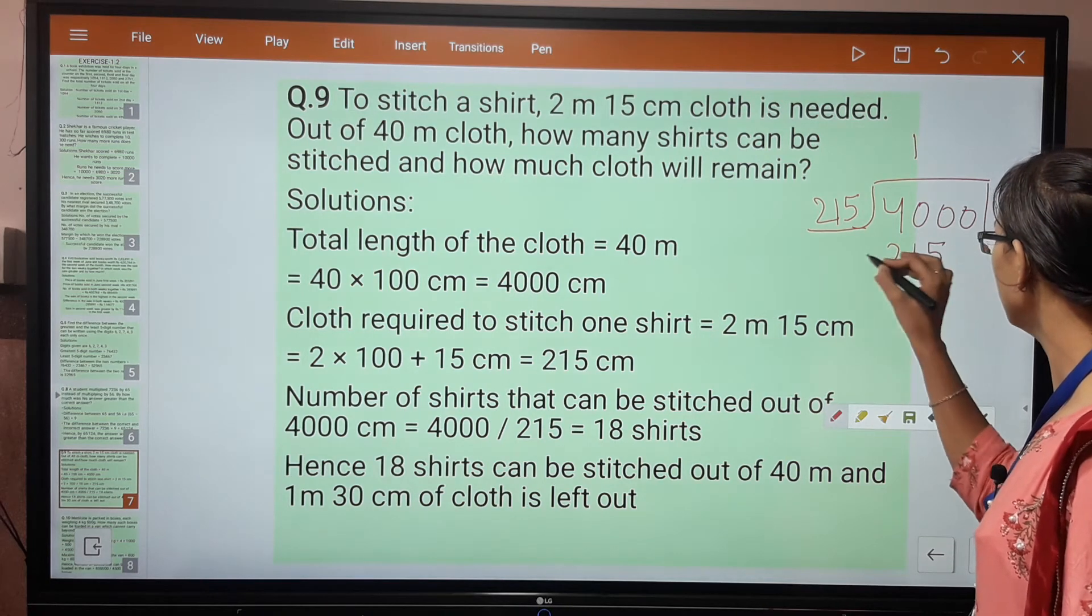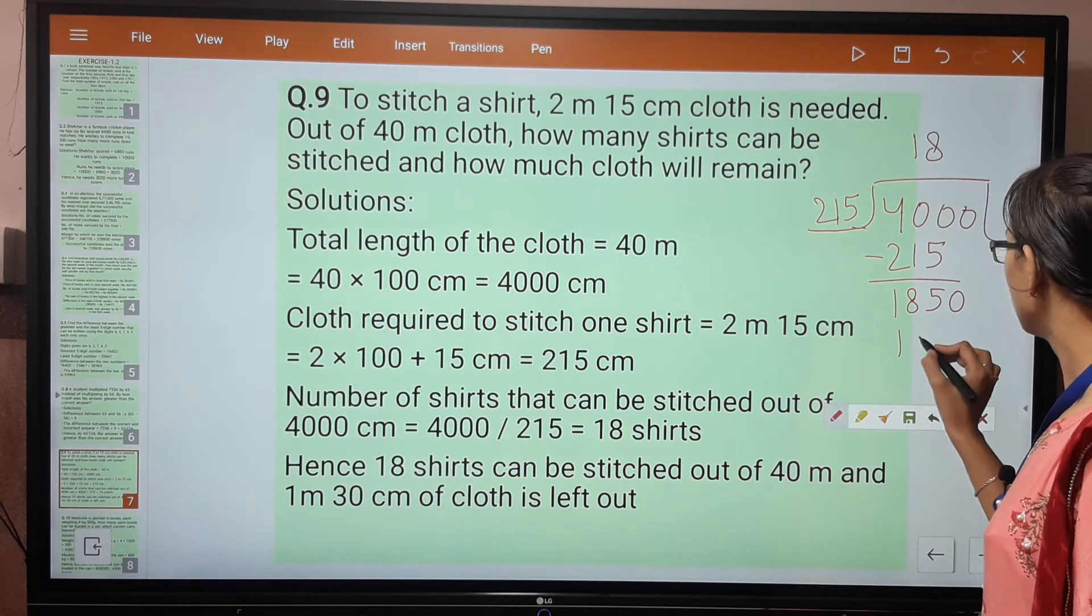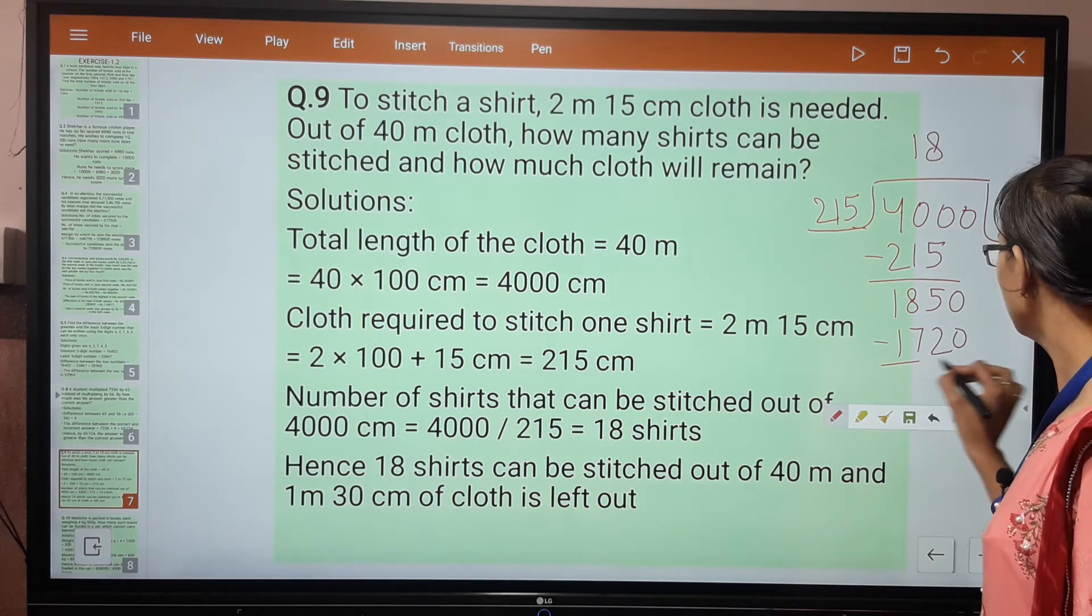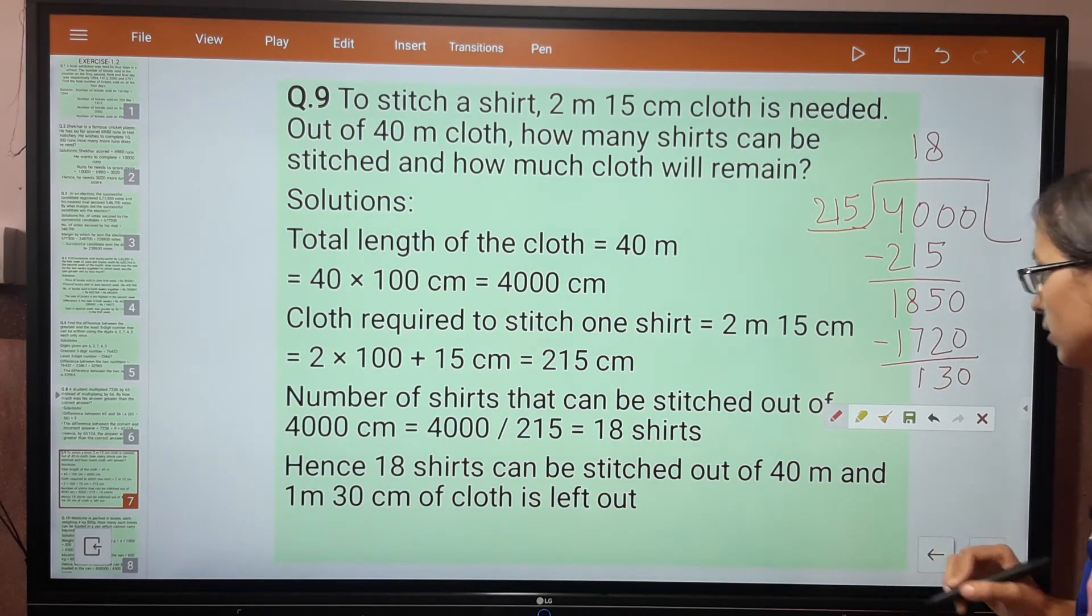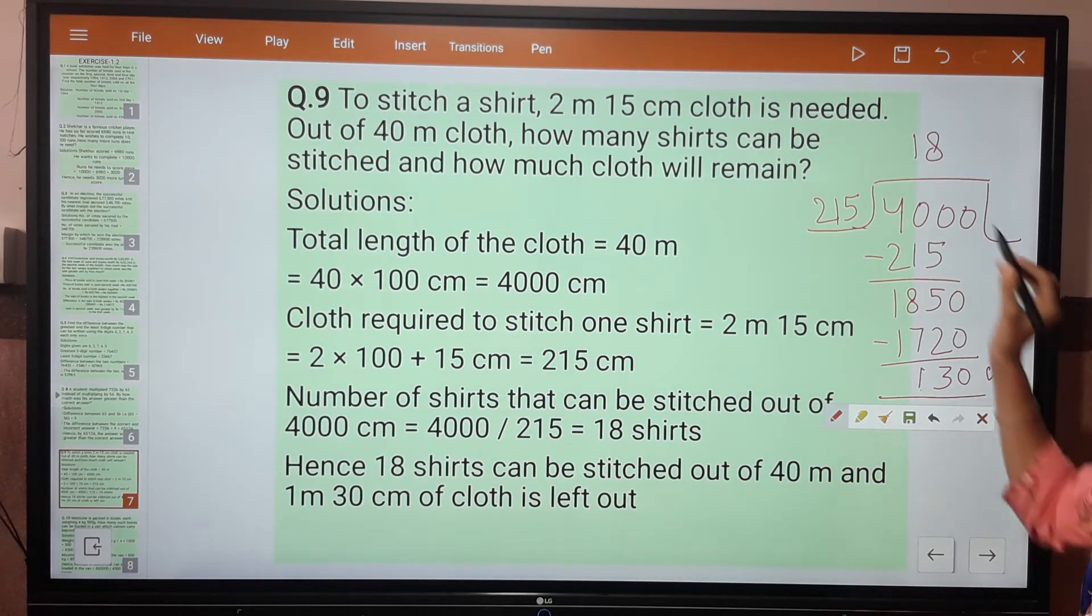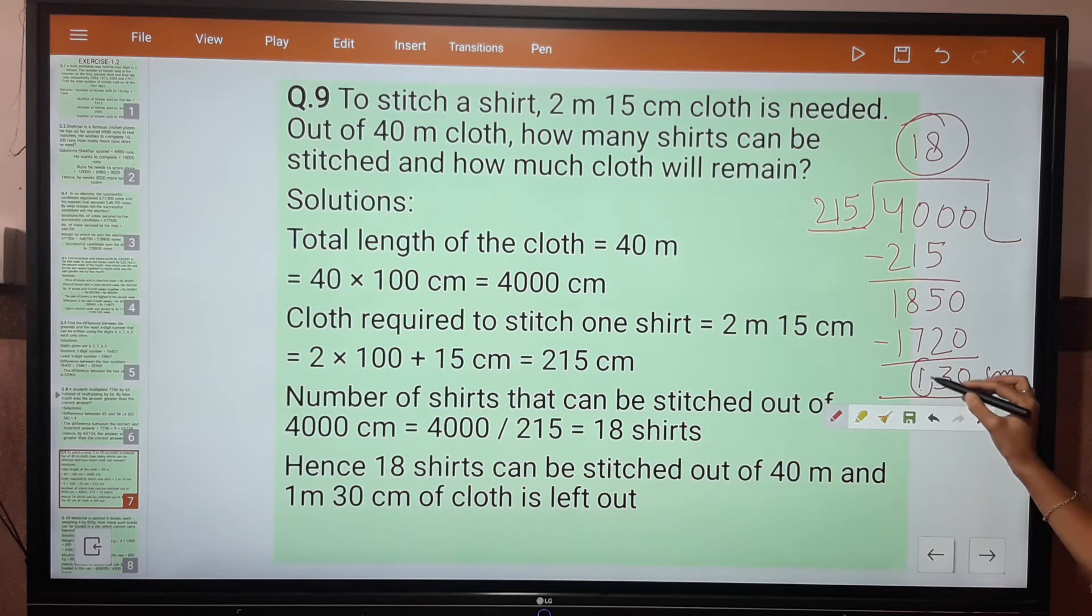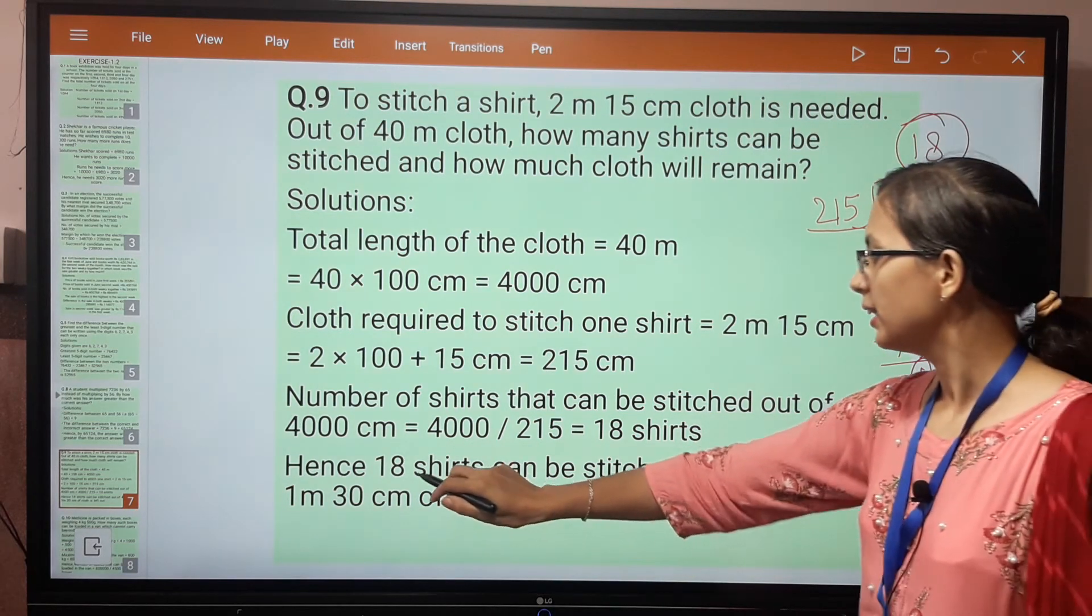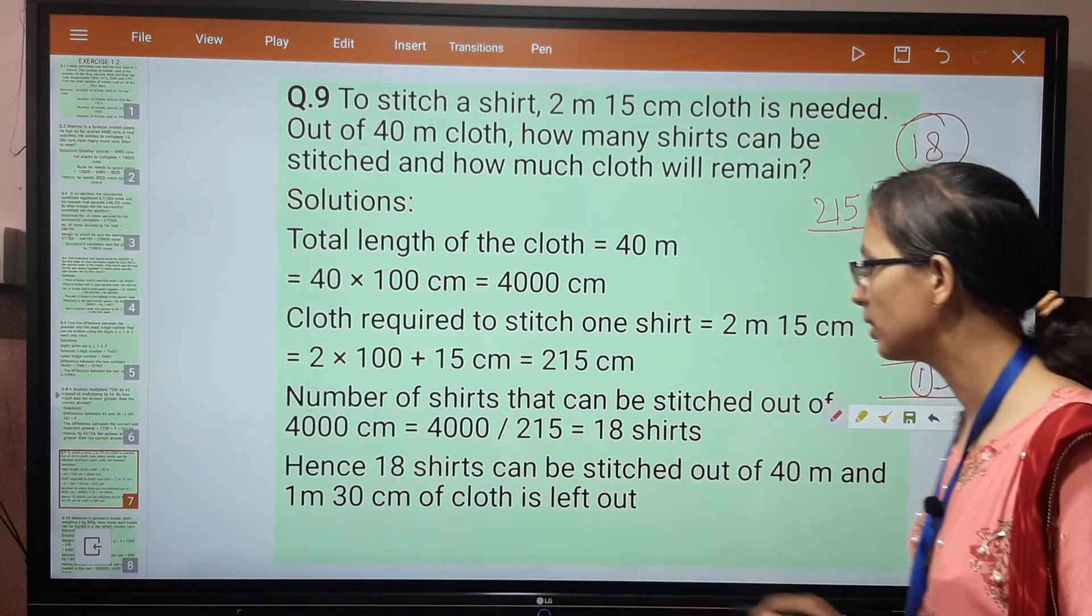4000 divided by 215: one time divide here gives us 18 with remainder 130. So the remaining part is 130 cm, which we can say is 1 meter 30 cm. Hence, 18 shirts can be stitched out of 40 meters, and 1 meter 30 cm of cloth is left out.